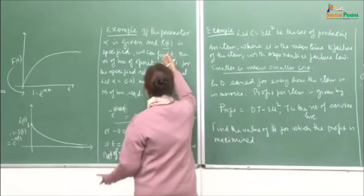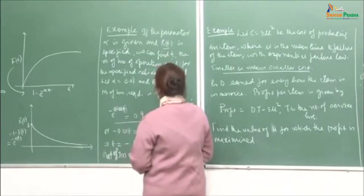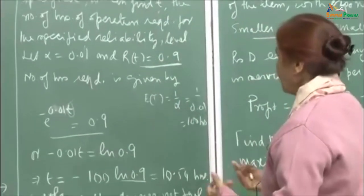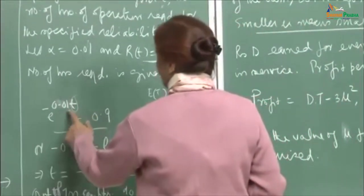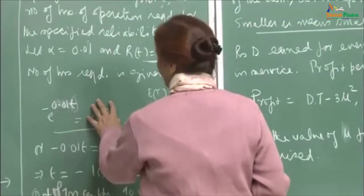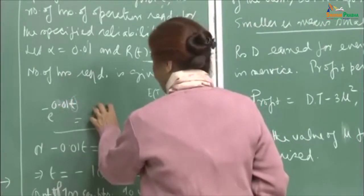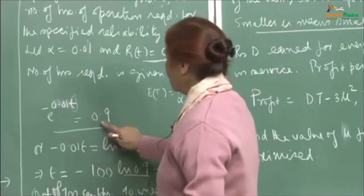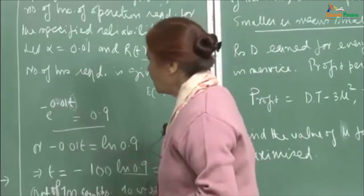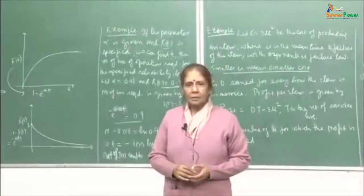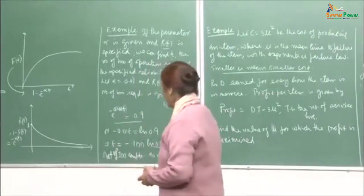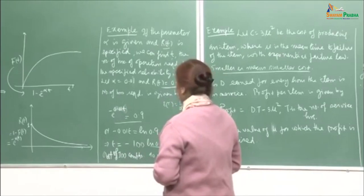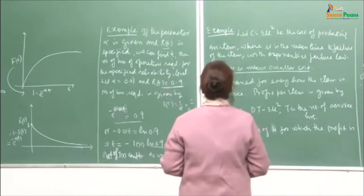Essentially it is a question of what is given and what can be computed. Sometimes you may be given the time and then compute the reliability level. If you are given the reliability level, you can determine the time. If you are given both time and reliability, you can determine the parameter alpha and thus uniquely determine the exponential failure law, because you only need the parameter alpha.